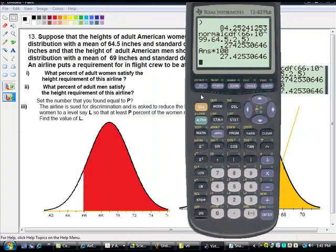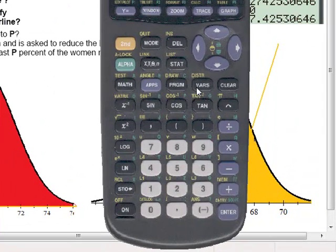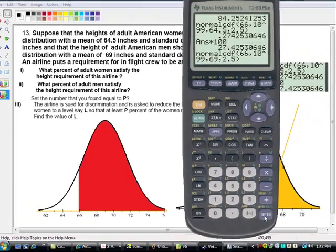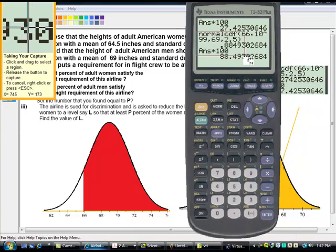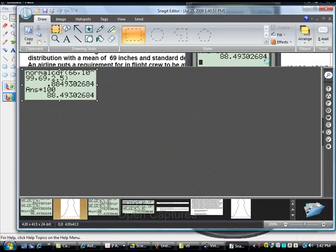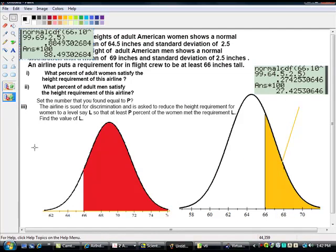I can press second enter. You guys know it better than I do. Sixty-six, ten to the ninety-nine, then sixty-nine, two point five. And then times a hundred. Eighty-eight point five percent. That sounds very, very good.